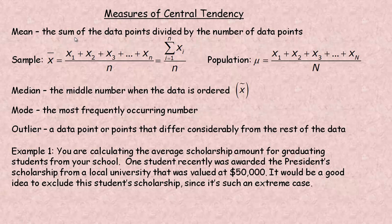In this tutorial, we're going to take a look at the three normal measures of central tendency. First of all, the mean, or some people call it the arithmetic mean, is the sum of the data points divided by the number of data points.